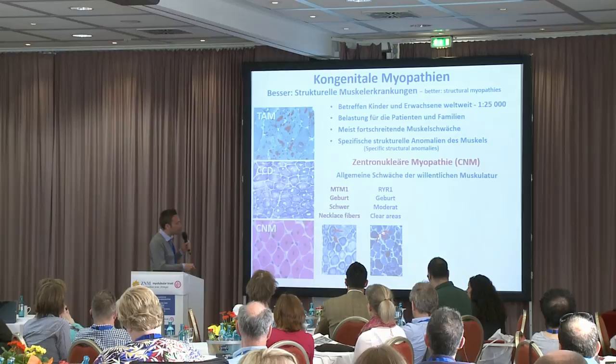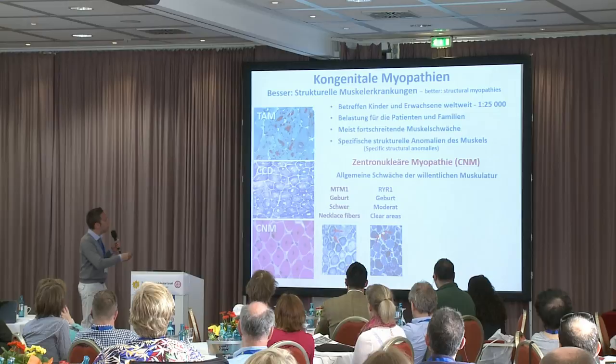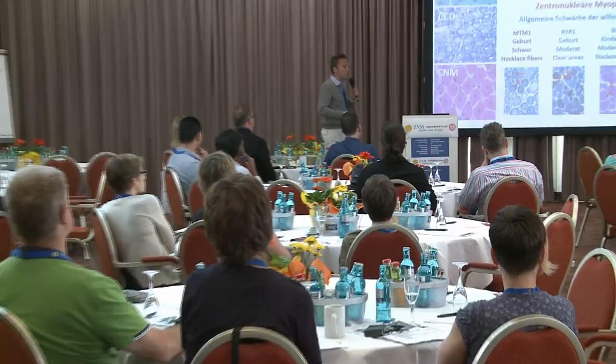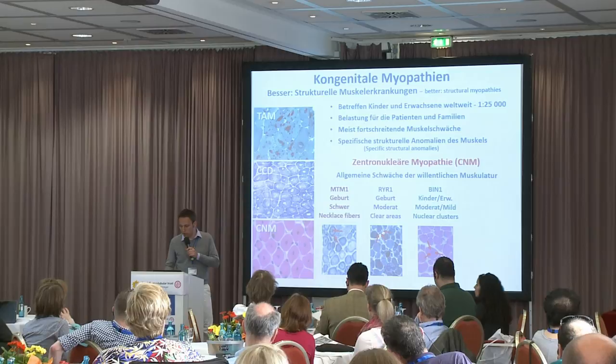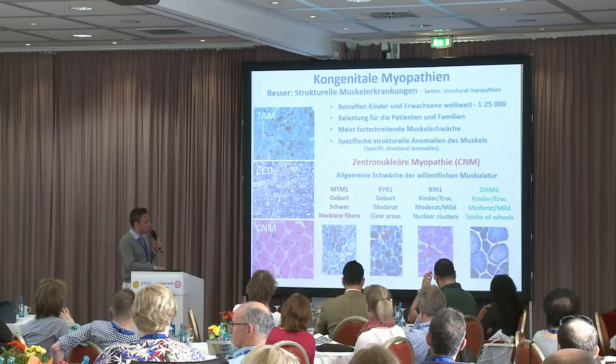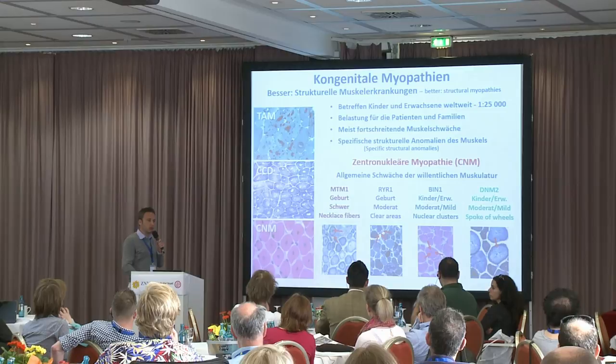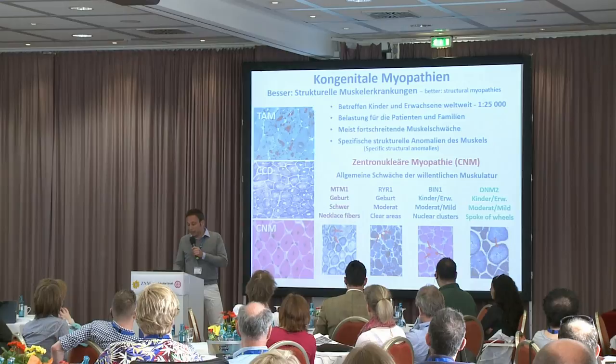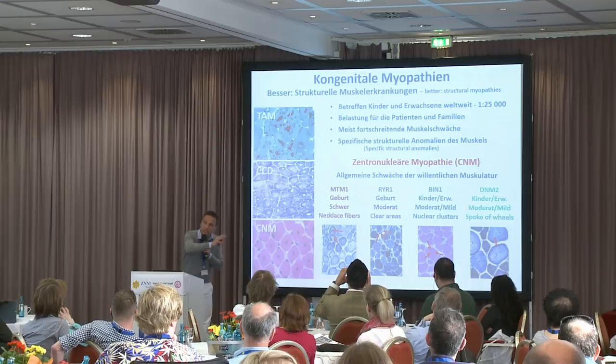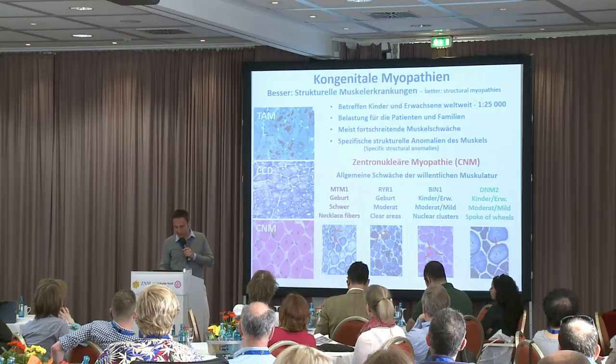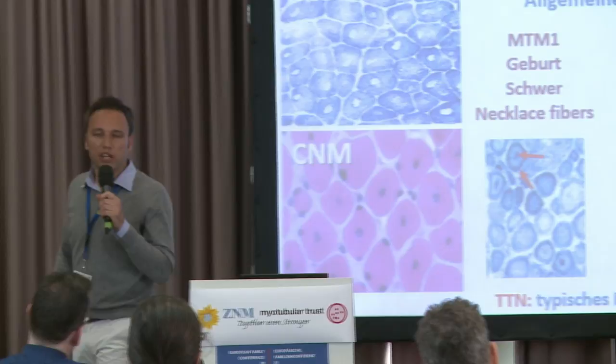For RYR-1 cases, there are little clear areas that are not as dark as the rest — it looks like a mixture of central core disease and RYR-1, and indeed there is some kind of overlap between these two diseases. In BIN-1 cases, there are not only central nuclei but rather nuclear clusters as well. And finally, in DNM-2 cases, you can see that there are small and large fibers where in between there are little bridges, or spokes of wheels, as we call them. These are the most typical cases of CNM that we see on a regular basis.